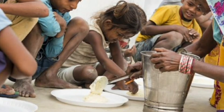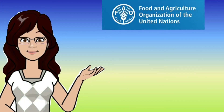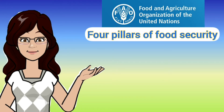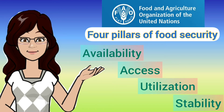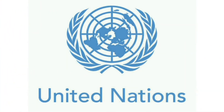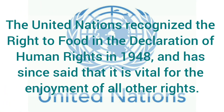Individuals who are food secure do not live in hunger or fear of starvation. The Food and Agriculture Organization of the United Nations identified the four pillars of food security as availability, access, utilization, and stability.